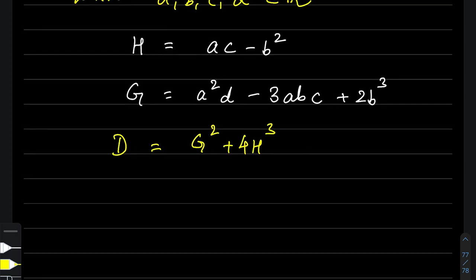This D plays a major role in deciding the nature of the roots of the cubic equation. There are four cases: case one — all roots are real and distinct; case two — two roots are equal and one root is different; case three — all roots are real and equal; case four — one real root and two imaginary roots.